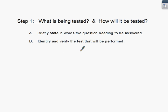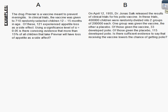We did that in an earlier video from sampling distributions. Now let's look at some examples. We have Prevnar, which is a vaccine. The question is: is there sufficient convincing evidence that more than 15% of all children that take Prevnar will have a loss of appetite as a side effect?